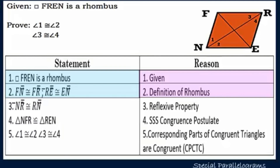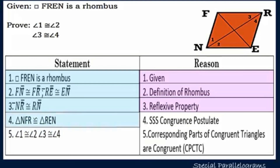Statement three: line segment RN is congruent to line segment RN — reflexive property. Statement four: triangle NFR is congruent to triangle REN by the SSS congruence postulate. Statement five: angle one is congruent to angle two, and angle three is congruent to angle four, by CPCTC — corresponding parts of congruent triangles are congruent.